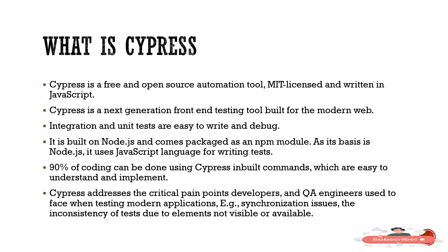What is Cypress? Cypress is a free and open source automation tool with an MIT license written in JavaScript. Cypress is the next generation front-end testing tool built for the modern web. When it comes to the modern web, all web technologies that use JavaScript — like Angular and React — are the modern web, and we can utilize Cypress for end-to-end testing. Integration and unit testing are also easy to write and debug using Cypress.